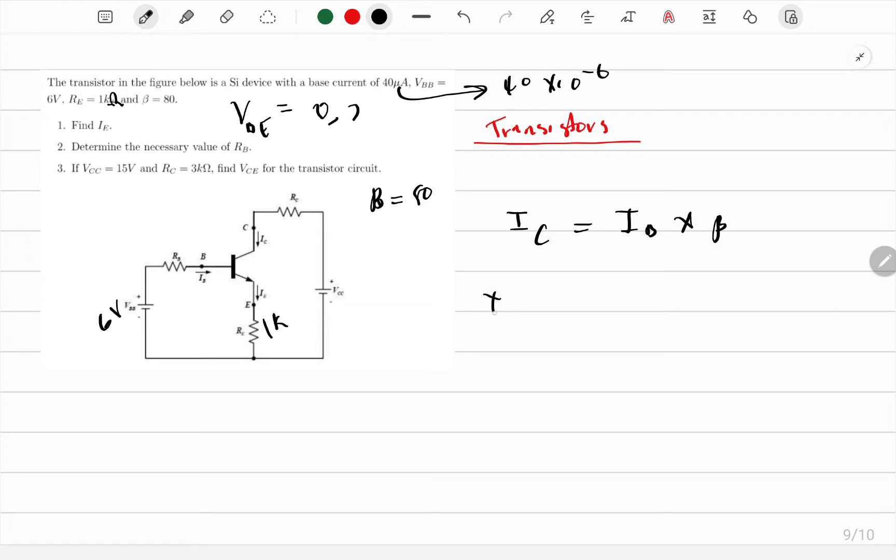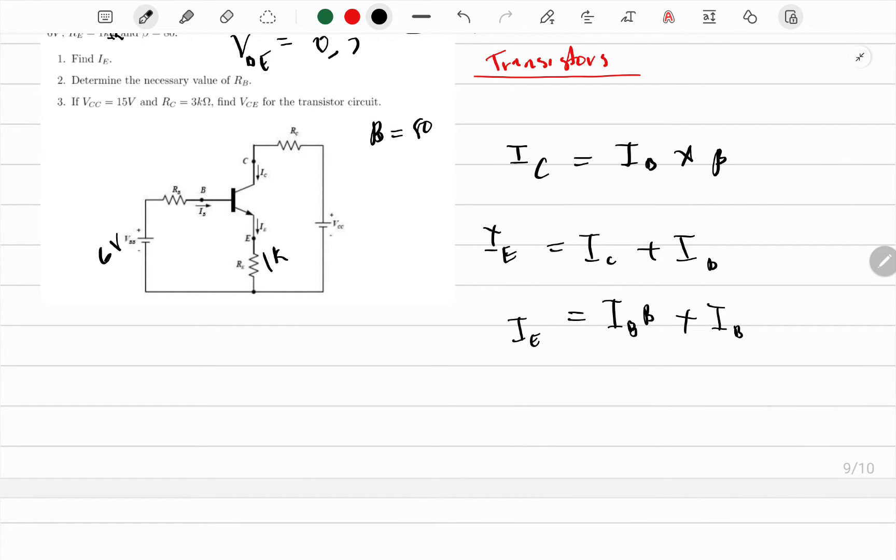I remember the current in the emitter will be equal to current in the collector plus current in the base. IE = IC + IB, and current in the collector is IB times β. What we're looking for is current in the emitter, which will be 40 times 10 to the negative 6 times 80 plus 40 times 10 to the negative 6.